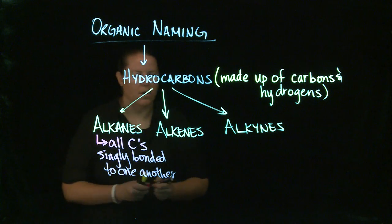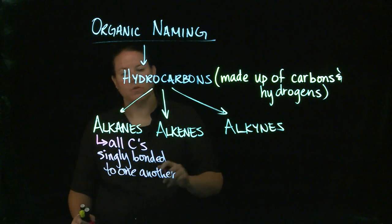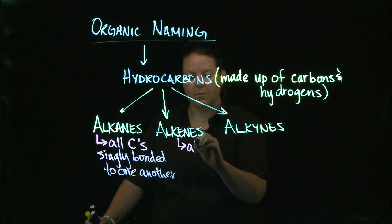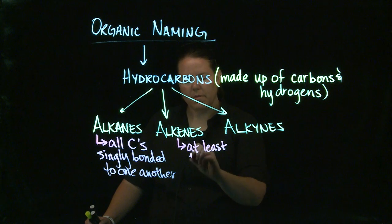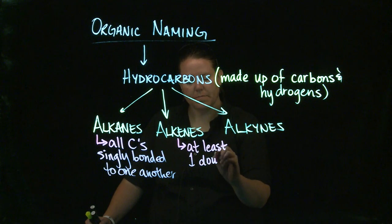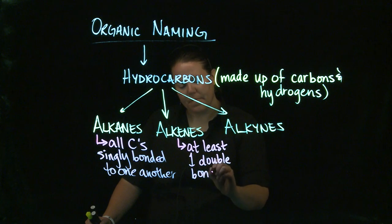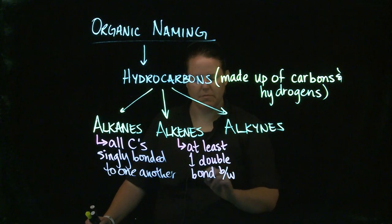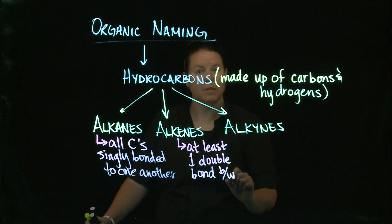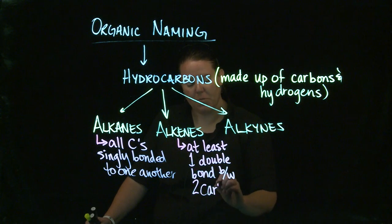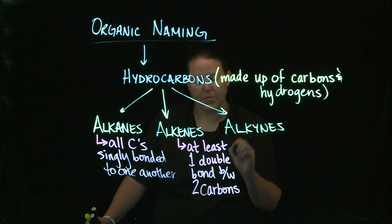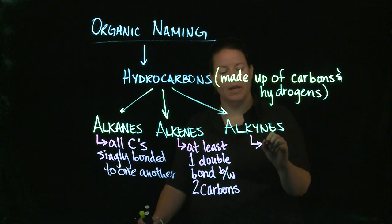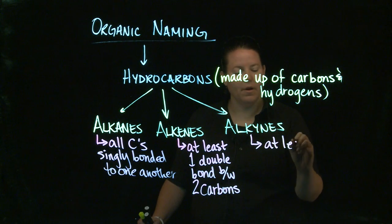If alkanes are all carbons singly bonded to one another, then alkenes have at least one double bond between two carbons — it can have more than one, but at least one. Alkynes have the distinguishing feature that they have at least one triple bond between two carbons.